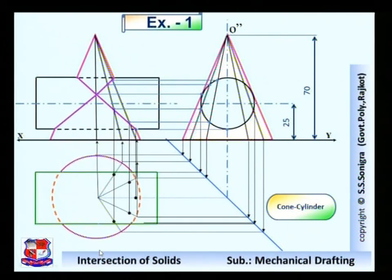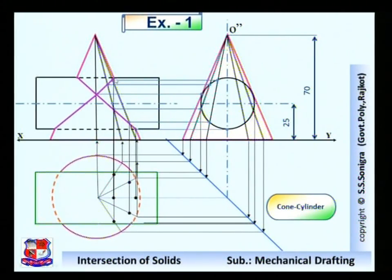So these are the points. Similarly, here is the point for this one. If we locate the position of this point, from this point draw a straight vertical line. This point is also on the same generator, so here is the point.